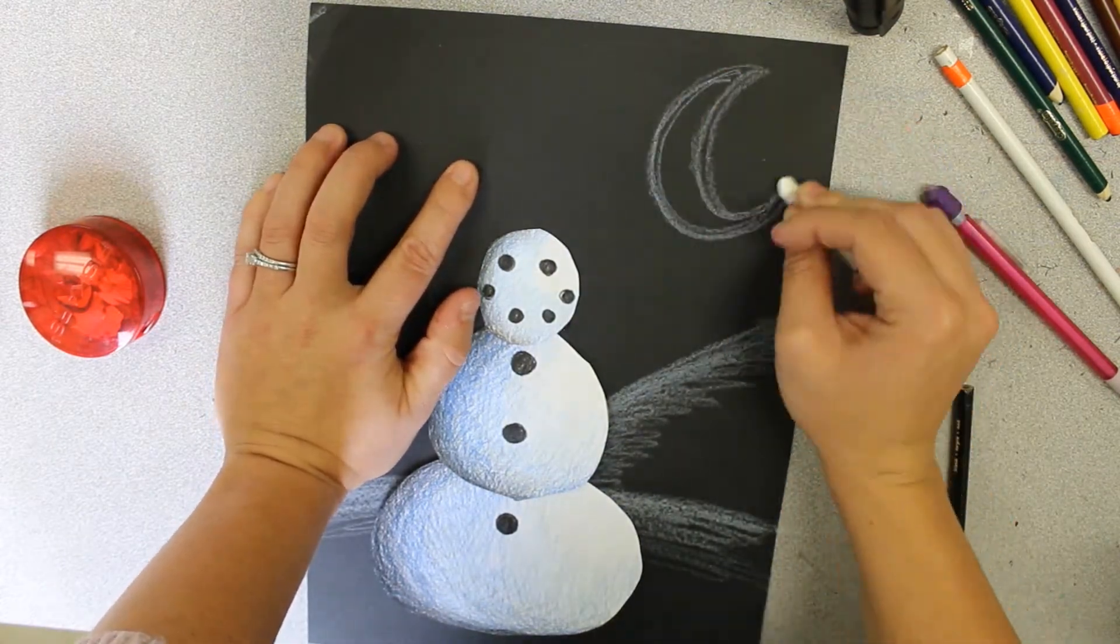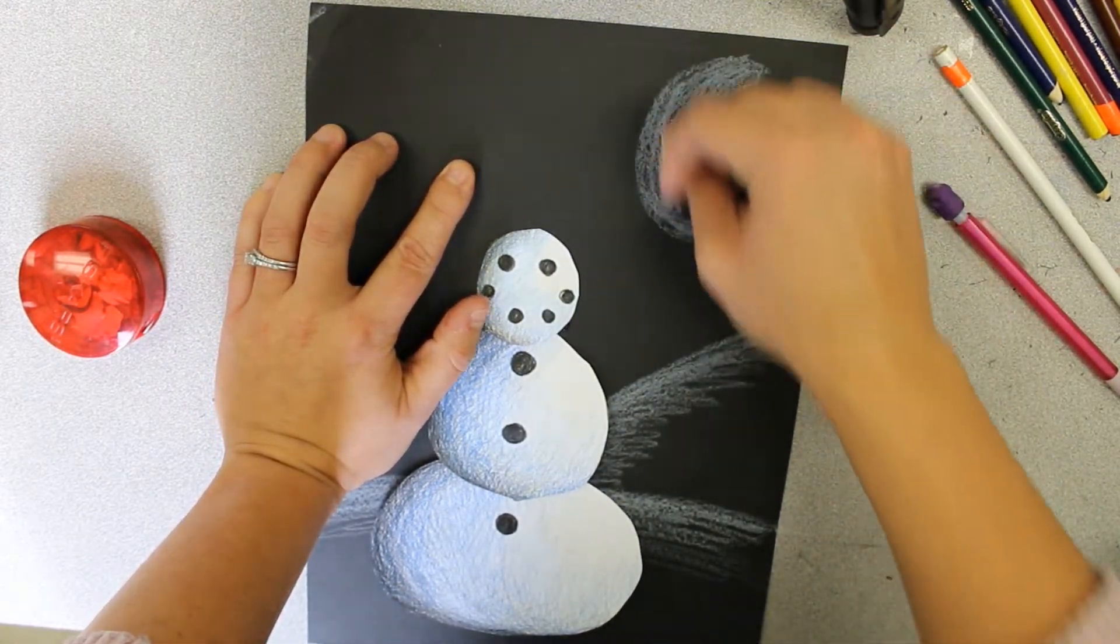Once your snowman is all put together you can start your background. I made a moon and some snowflakes.